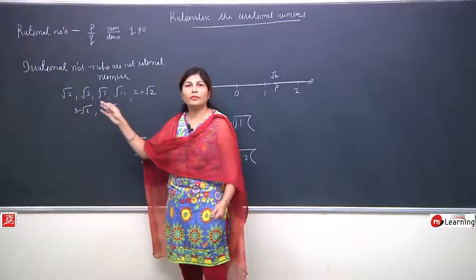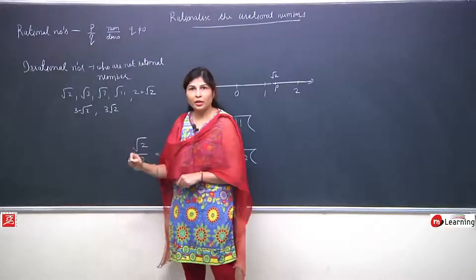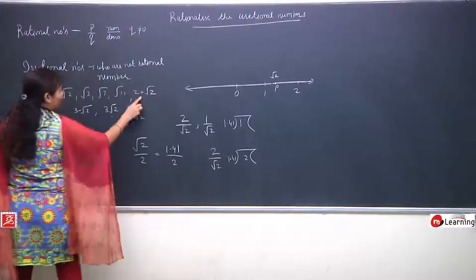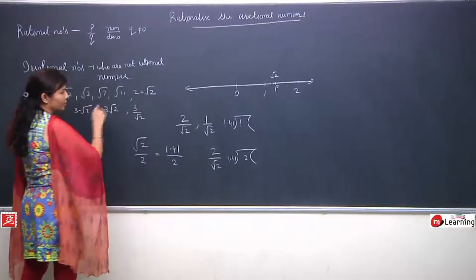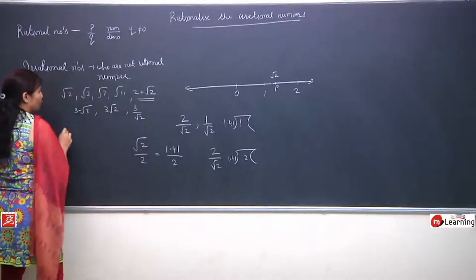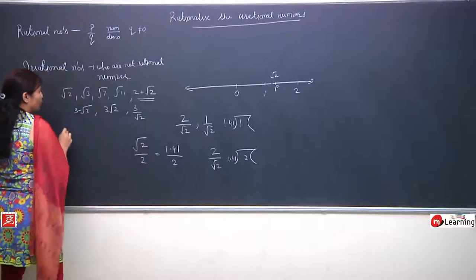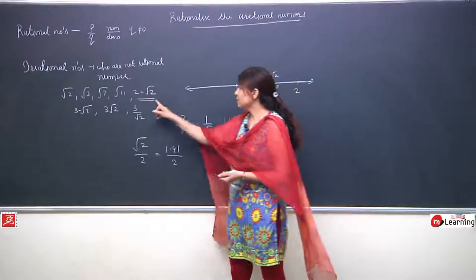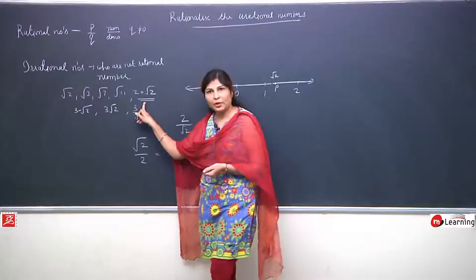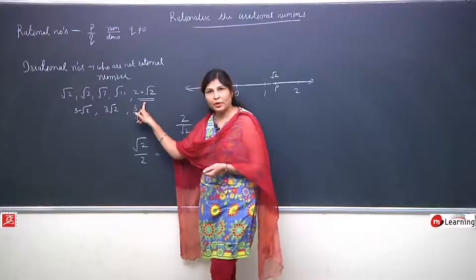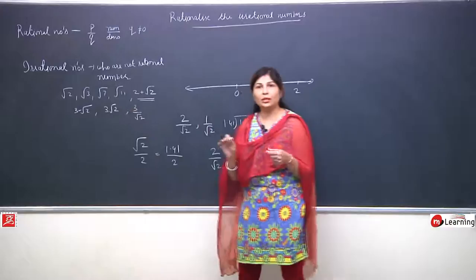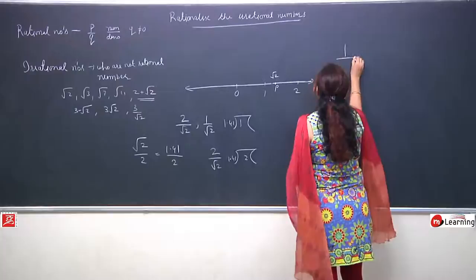We said that root 2, root 3, root 7, root 11 are all irrational numbers. If any number has addition, subtraction, multiplication, or division with them, they are still irrational numbers. Because the property says: if we add, subtract, multiply, or divide one rational and one irrational, the result will still be irrational. So these all are irrational numbers, and all four operations can occur between them, but the result remains irrational.